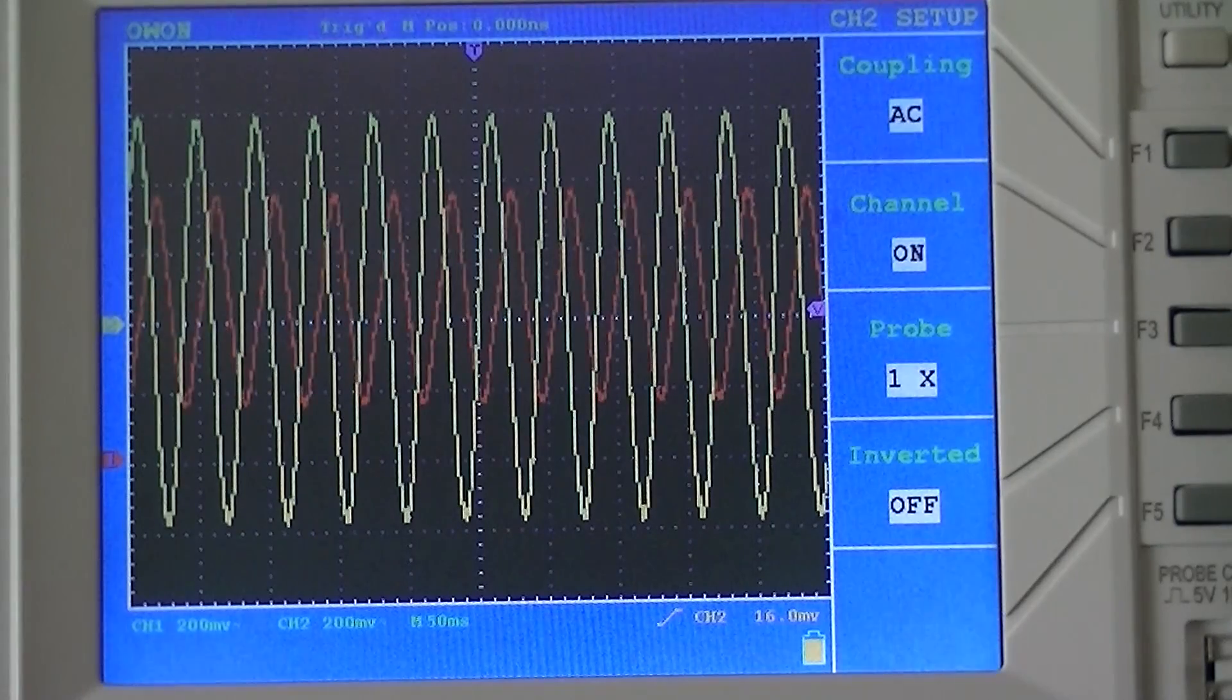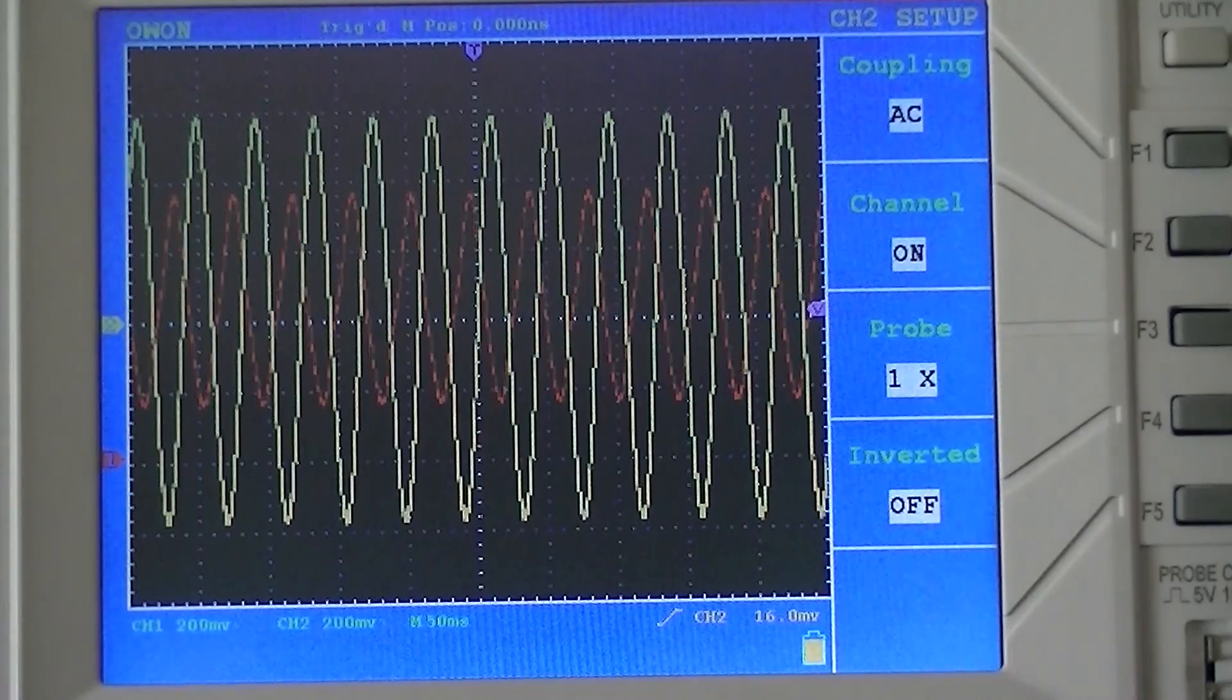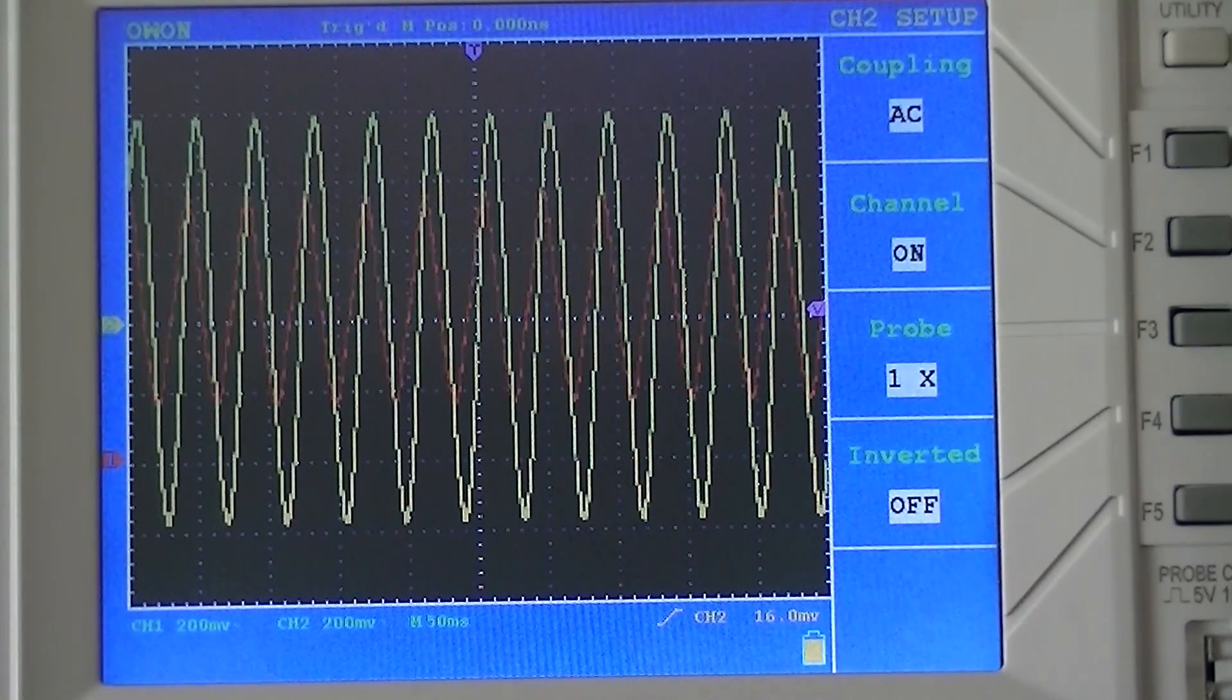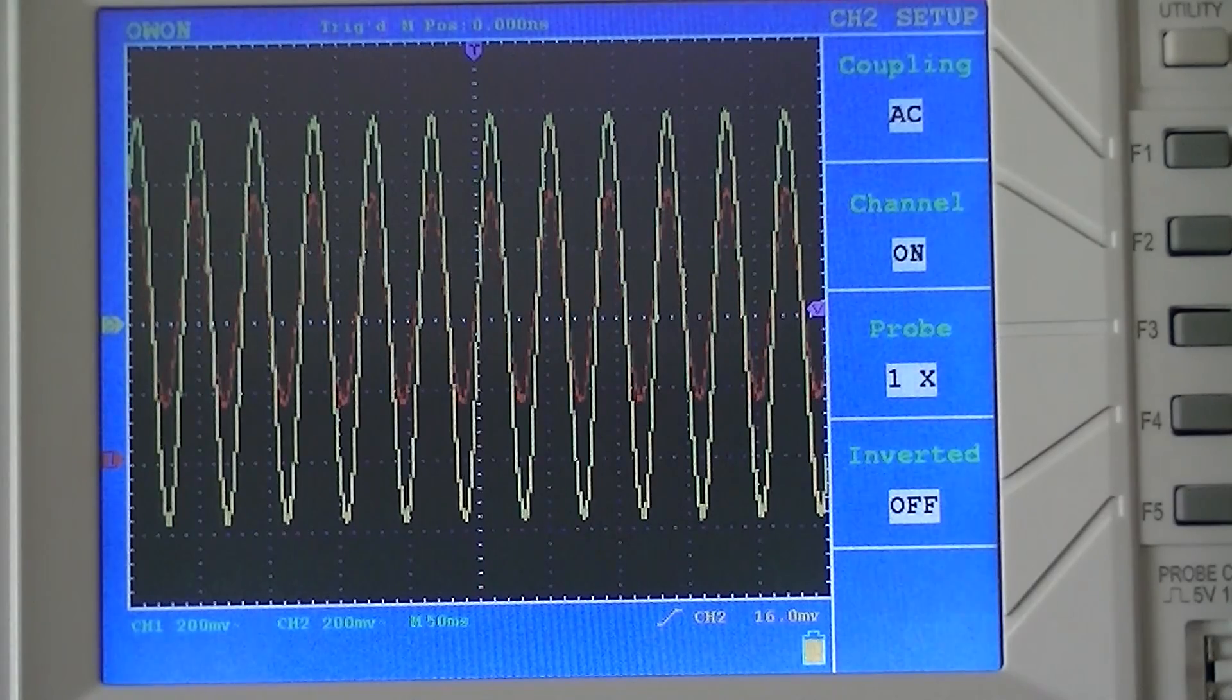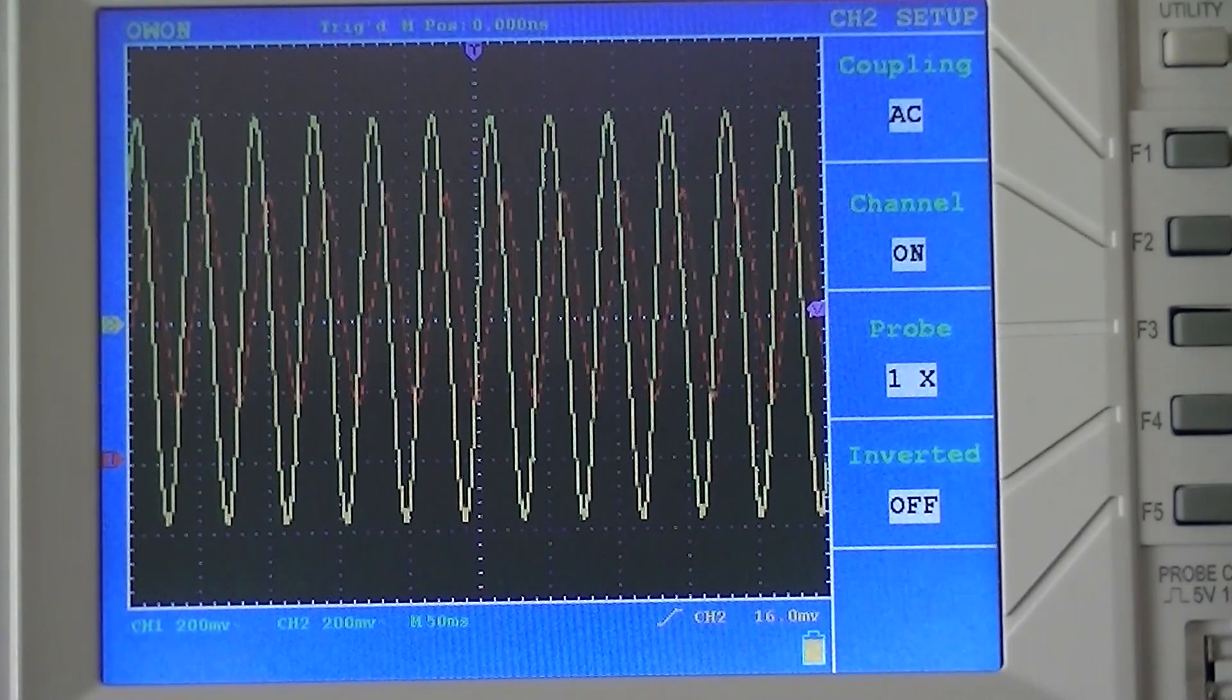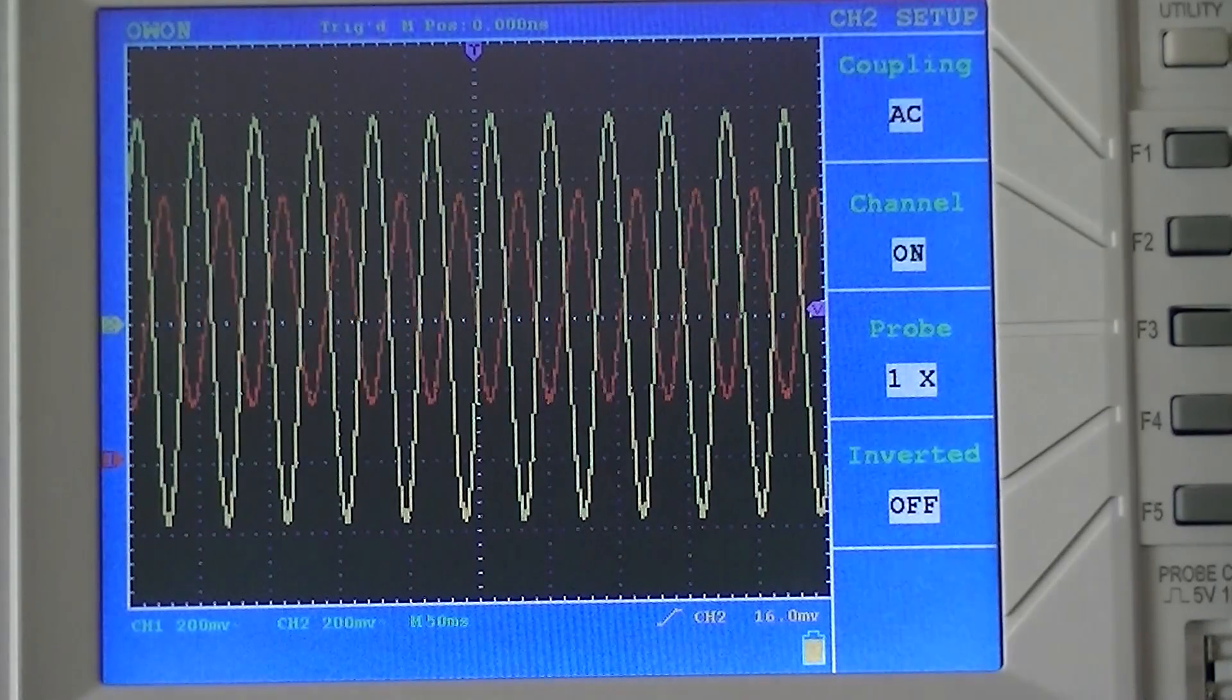actually noticed that this particular stereo system doesn't have a very good amplifier in it. If you don't have a good amplifier that can produce the 7.83 Hz frequency, you're not really listening to Schumann Resonances because you're listening to distortion. That distortion is probably not going to be very healthy.